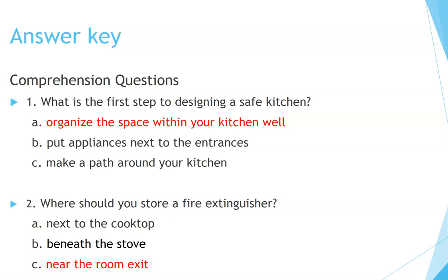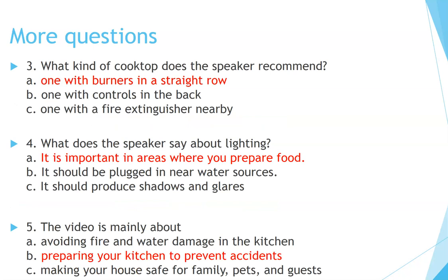Answer key. Number 1: What is the first step to designing a safe kitchen? Organize the space within your kitchen well. Number 2: Where should you store a fire extinguisher? Near the room exit. Number 3: What kind of cooktop does the speaker recommend? One with burners in a straight row. Number 4: What does the speaker say about lighting? It is important in areas where you prepare food. Number 5: The video is mainly about preparing your kitchen to prevent accidents.